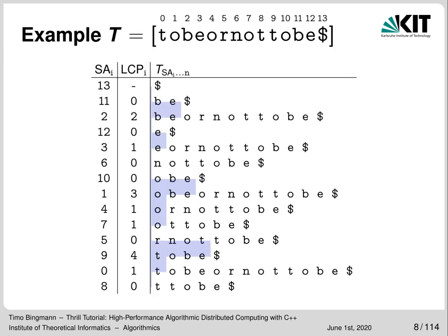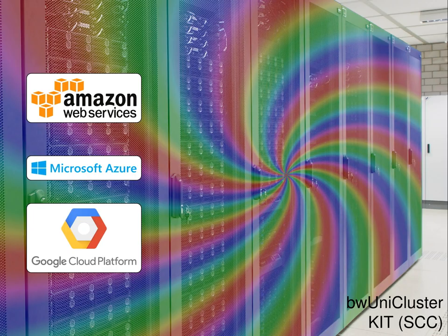The story of Thrill starts with suffix sorting. In my PhD, I was tasked to engineer a parallel distributed suffix array construction algorithm. The suffix array of a text is simply the indexes of all suffixes in lexicographic order. Many won't know this data structure, but it is a fundamental ingredient to text search algorithms, data compression, bioinformatics and stringology algorithms — and you really want to construct it for very large inputs.